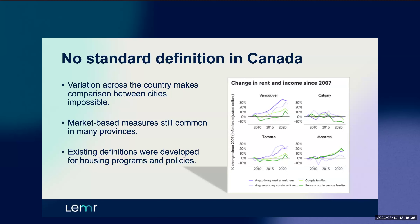We had to come up with a definition that we thought we could apply consistently over time. We looked at some of the other measures that other provinces and cities are using — many of them remain market-based measures. Market-based measures tell us how the market is doing, but they don't necessarily tell us whether people have enough money to afford those units. In theory, market-based can be fine if income and rent move together at the same pace. The purple lines on the charts show the change in rent over time for primary market units and secondary condo units, while the green lines show adjusted income for couple families and people who are not in census families. We see it varies quite a bit by city.